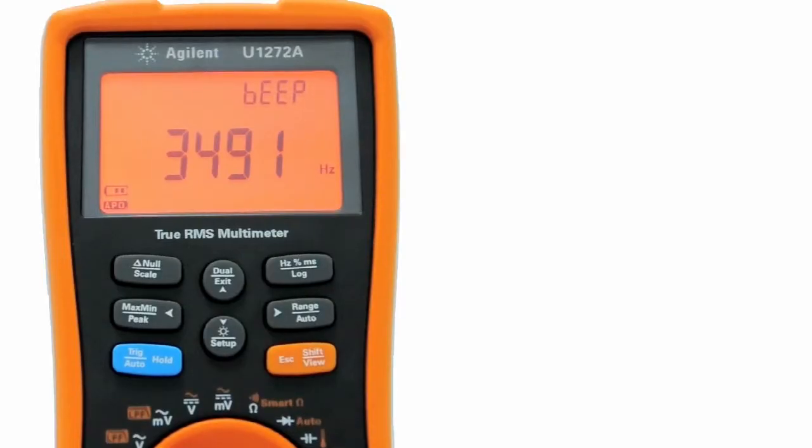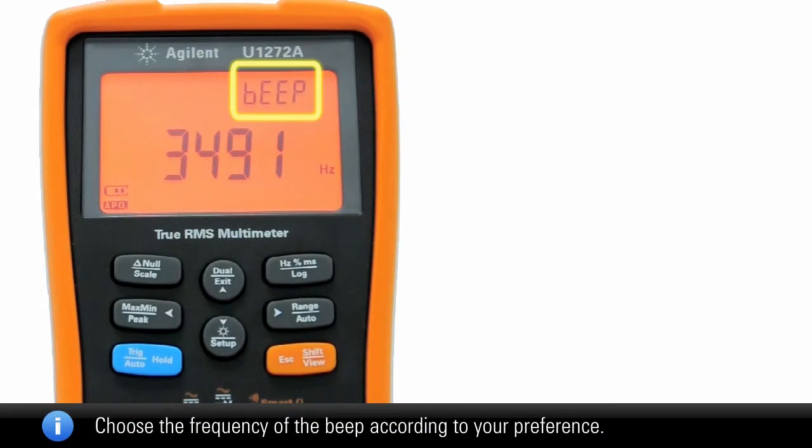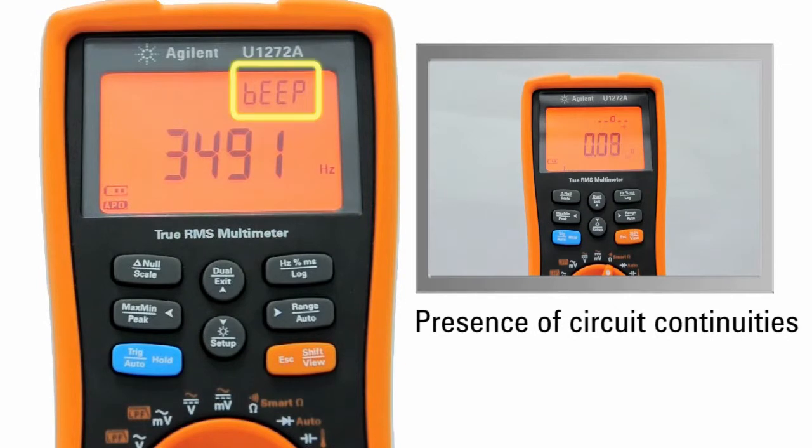Beep frequency: the beeper alert setting is the first item on the setup menu. The multimeter's beeper alerts users to the presence of circuit continuities.